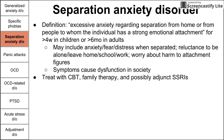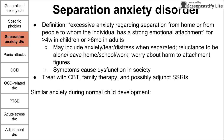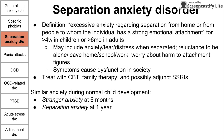Symptoms need to cause dysfunction in daily life. Treatment is CBT, family therapy, and possibly SSRIs. Similar anxiety during normal child development occurs physiologically and is not pathologic. This includes stranger anxiety at six months, when a child begins to fear unfamiliar people, and separation anxiety that normally occurs at one year, when a child begins to worry about being separated from their attachment figure.